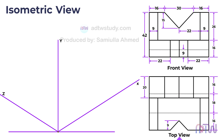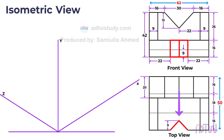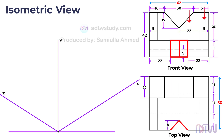Let's begin the drawing process by creating the base of the figure. From the top view we can see that the base has a width of 50 millimeters and a length of 62 millimeters. Additionally, there is a notch at the front edge of the base. The notch is positioned 22 millimeters away from the side of the object and has a depth of 9 millimeters. To determine the width of the notch, subtract the 22 millimeters from the total distance of 31 millimeters, resulting in 9 millimeters representing the half width of the notch.